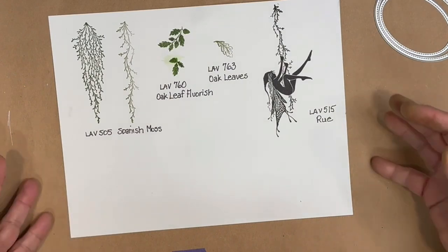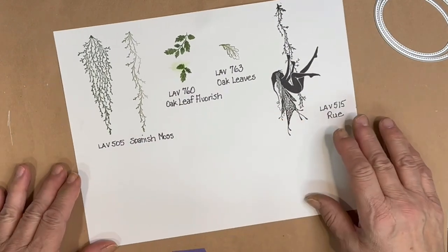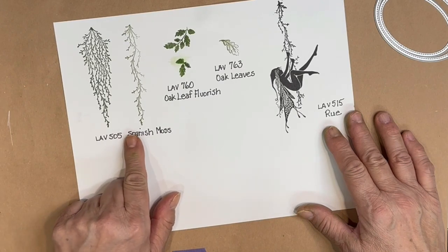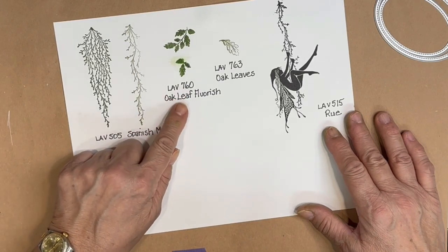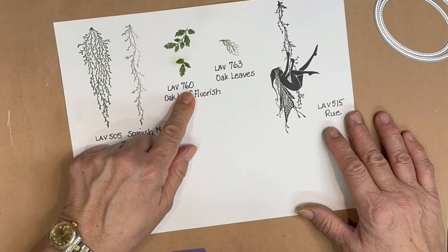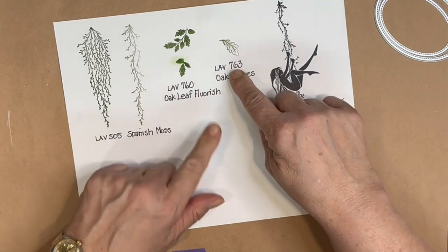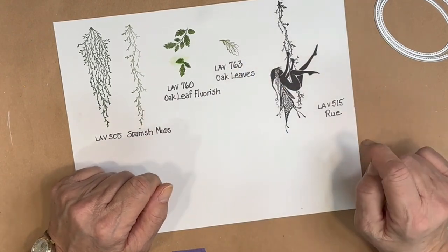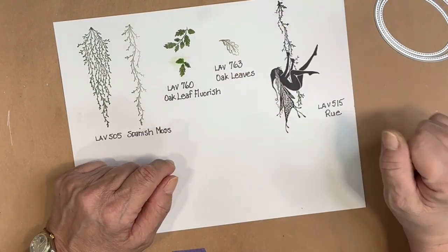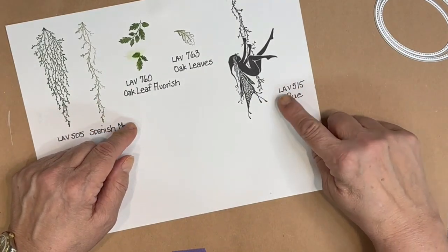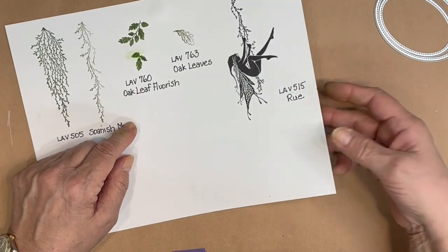For today's project, I'm going to feature these stamps from Lavinia: the Spanish Moss, which is Lavinia 505, the Oak Leaf Flourish, which is Lavinia 760, Oak Leaves Lavinia 763, this is one from a set of three, and I'm going to be using the Fairy Rue, Lavinia 515.